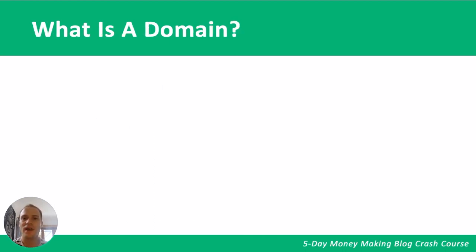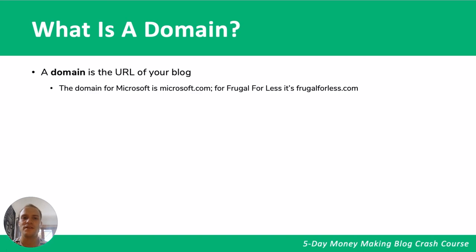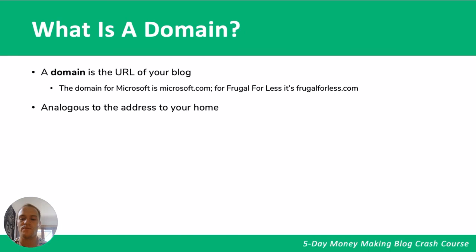Now that we have our niche more or less defined, let's cover how to choose a blog name. First, what is a domain? A domain is the URL for your blog — for example, Microsoft.com or frugal4less.com. You can think of a domain as being analogous to the address of your home: just as an address is a path to get to your home, a domain is like a map to get to your site.